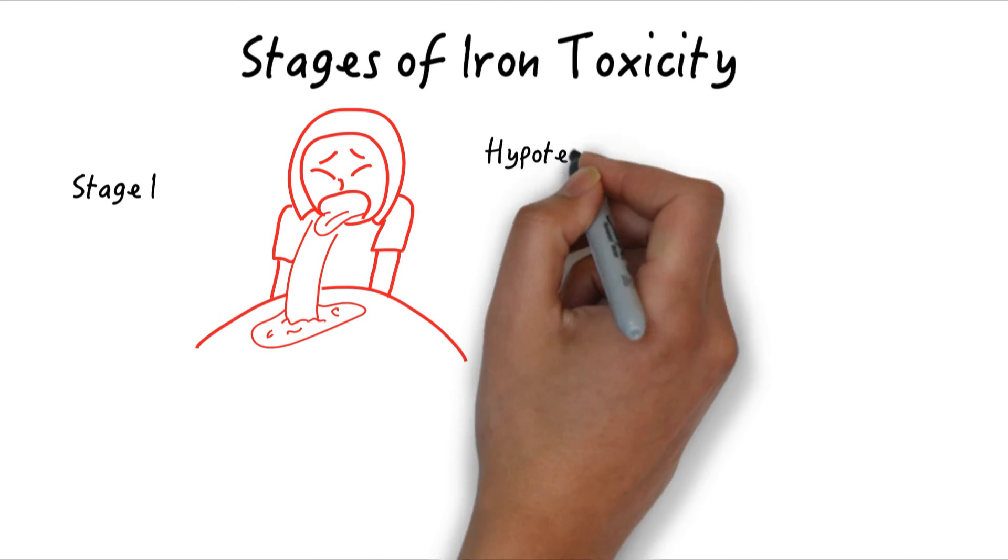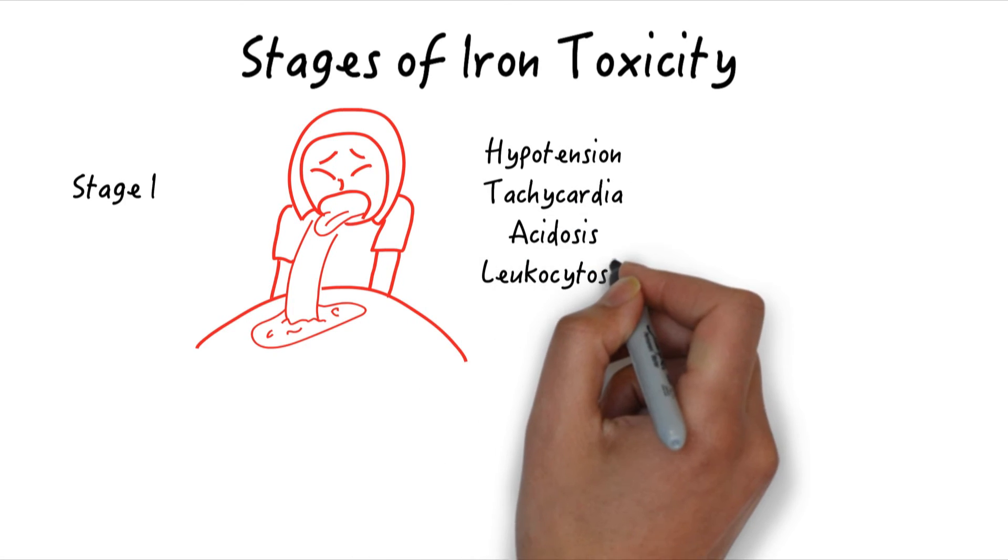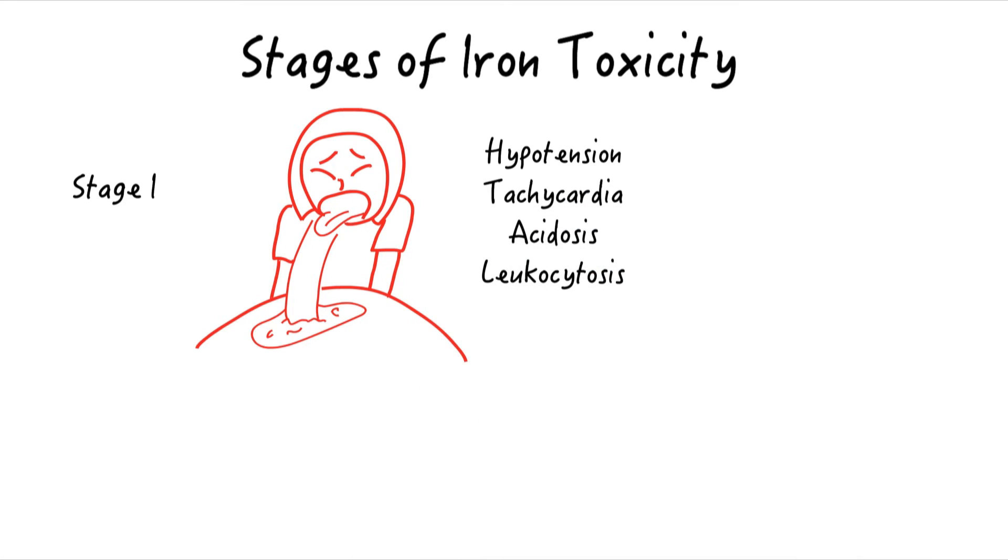Late phase one signs are hypotension, tachycardia, and pallor. The patient can develop anion gap acidosis, hyperglycemia due to sympathomimetic effects, and a demargination leukocytosis from a stress state.